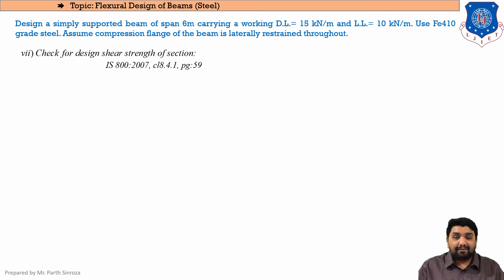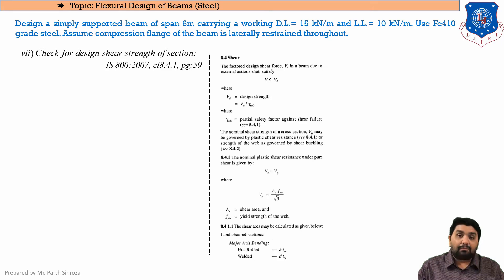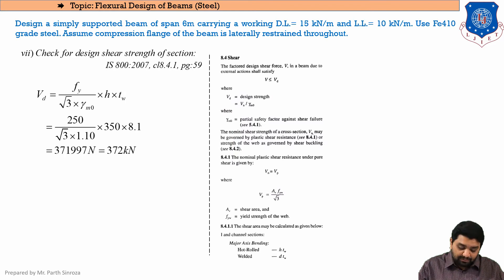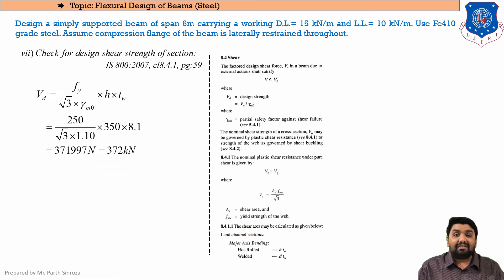Next is the check for design shear strength, from clause 8.4 (page 59 of IS code). The design shear strength is VD = VN / γM0, where VN = VB. For hot-rolled sections per clause 8.4.1.1, the shear area AV = H × TW = 350 × 8.1. Substituting into VD = Fy / (√3 × γM0) × AV gives VD = 372 kN.